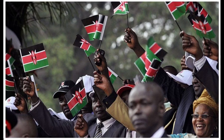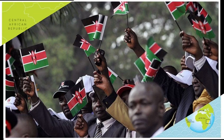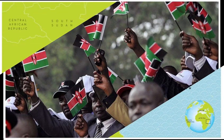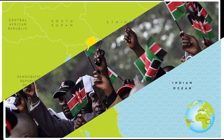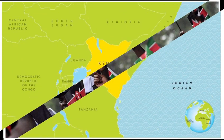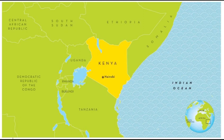The Economist Intelligence Unit rated Kenya a hybrid regime in 2022. The political terror scale gave the country a rating of four, meaning that civil and political rights violations had expanded to large numbers of the population. Murders, disappearances, and torture were common parts of life.